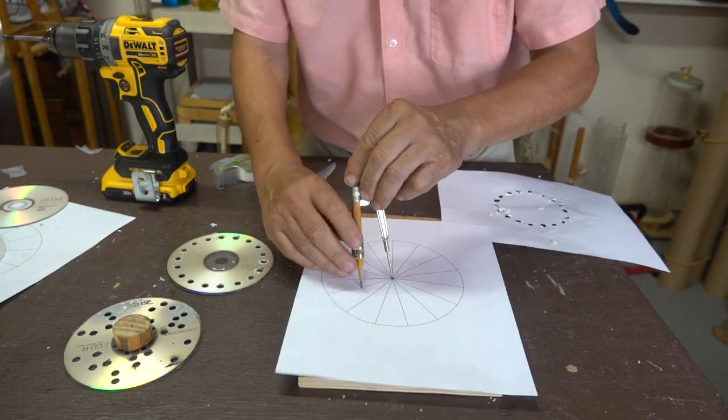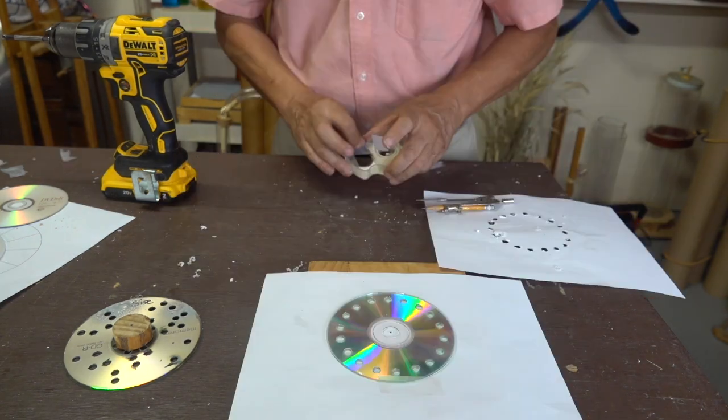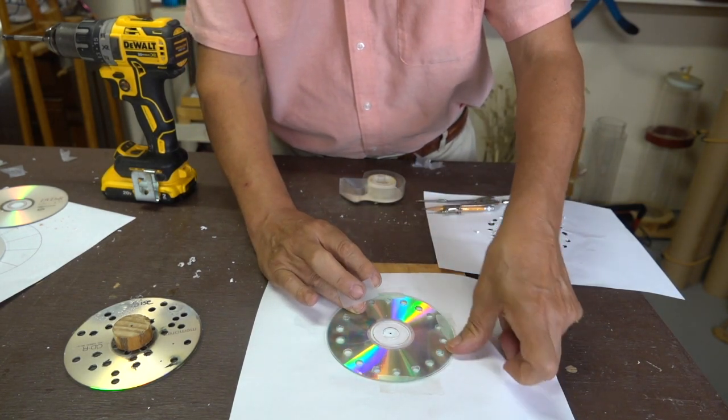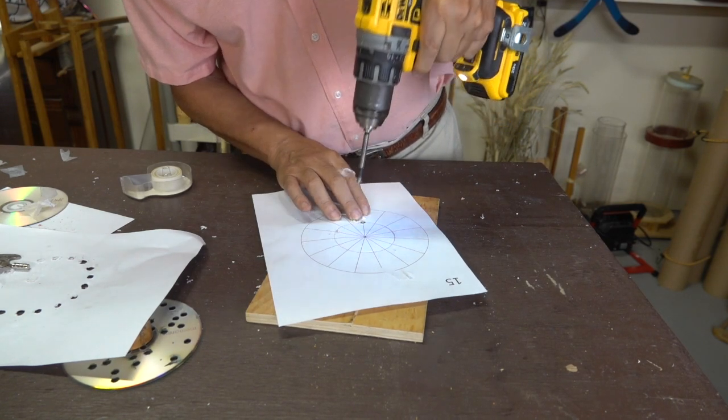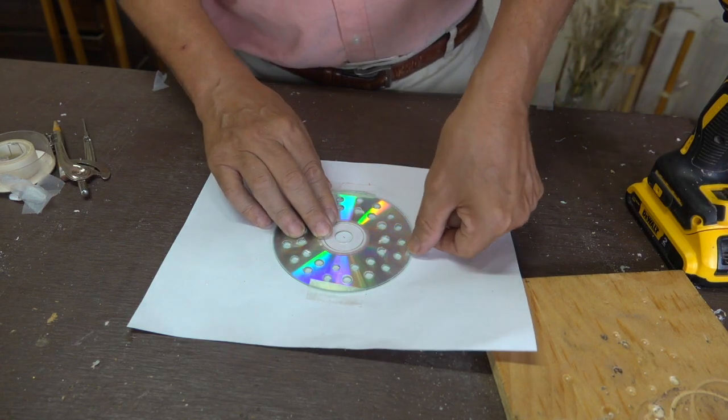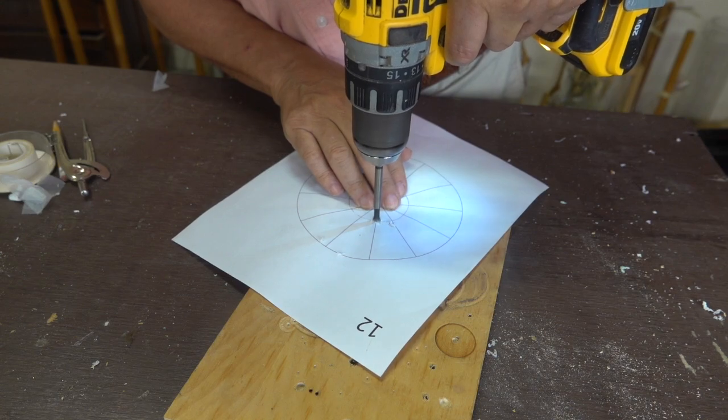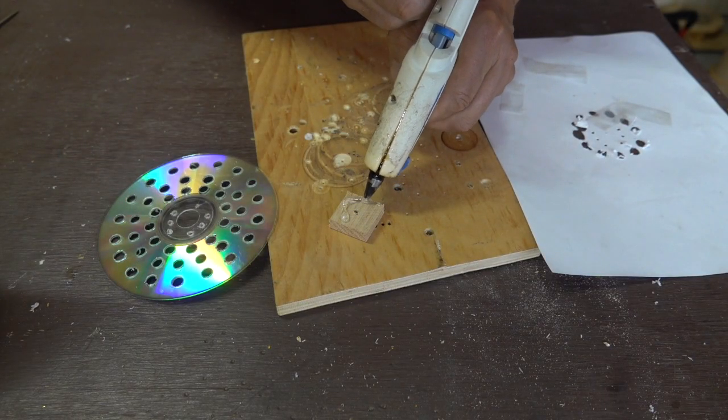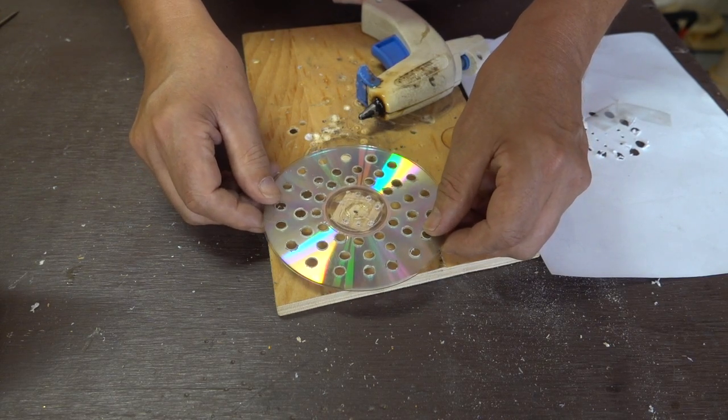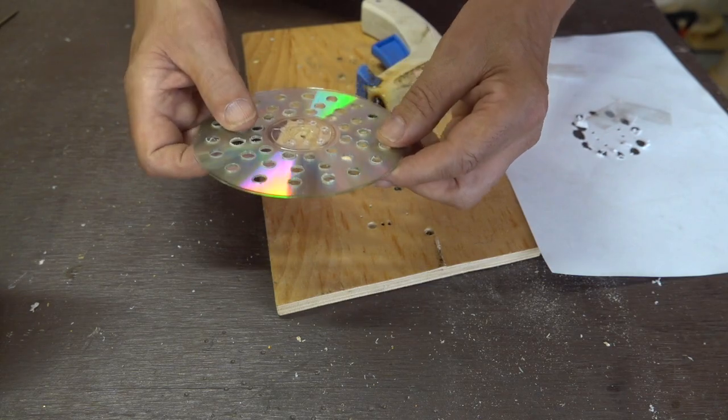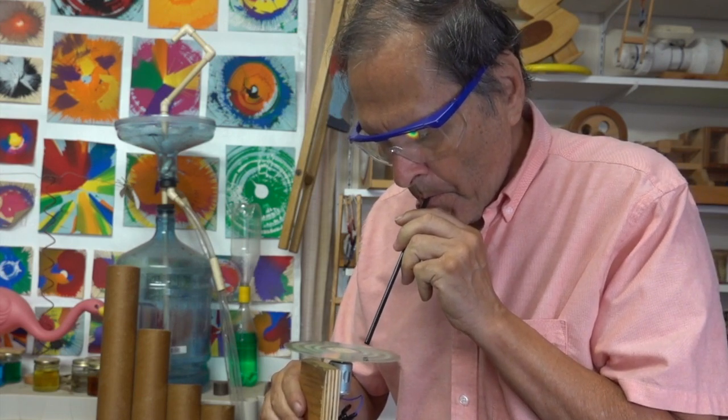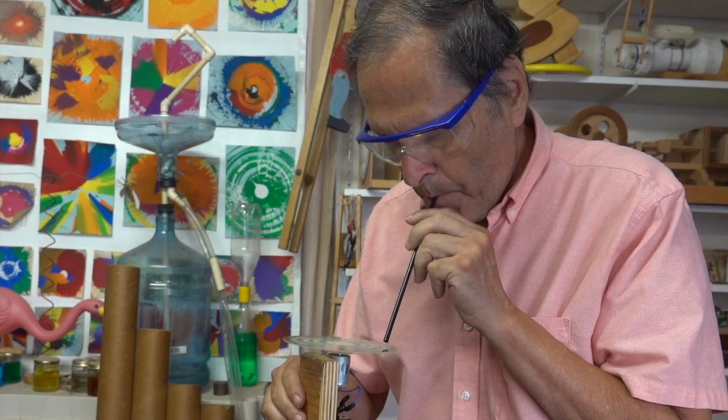I'll repeat that same procedure for the next circle. This time it's going to be 15 holes. I'll repeat that process once more, this time for 12 holes. That's going to be the innermost circle. With all the holes drilled, I'll now attach a small block of wood that's going to hold the CD to the motor. Alright, now let's give this one a try. There we go.